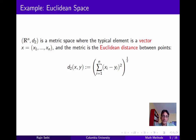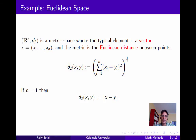As another example, consider Euclidean space, Rn. This is the set of n-tuples drawn from the real numbers, and the metric is the Euclidean distance as shown on the slide. And if n equals 1, this distance is simply the distance between the two points on the real line.